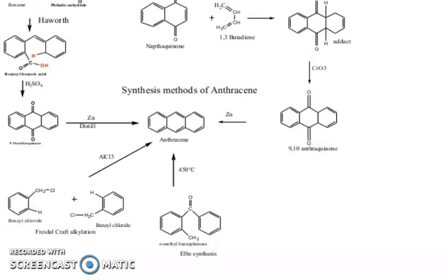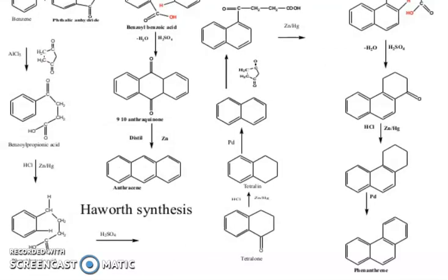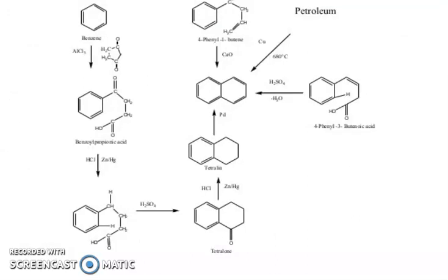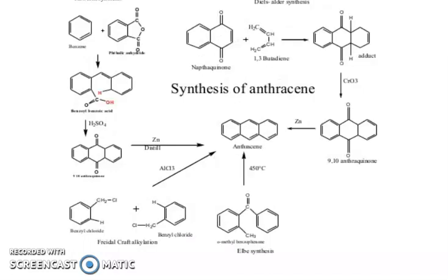In the same way, the synthesis of anthracene: Friedel-Crafts alkylation, from Elbs synthesis, and from 9,10-anthracenedione. Starting from benzene with acetic anhydride and benzene, you can obtain anthracene from different synthetic routes — including Haworth synthesis and others.